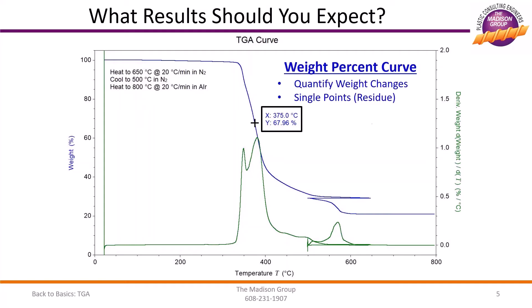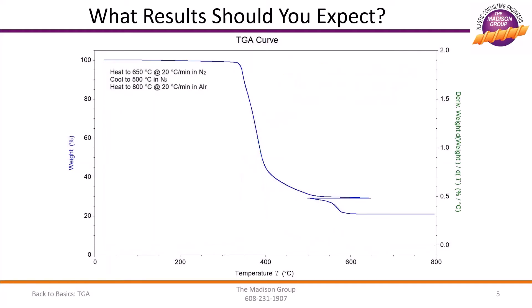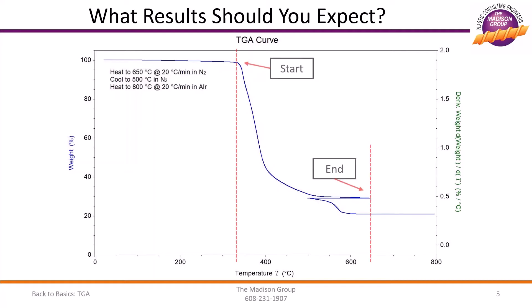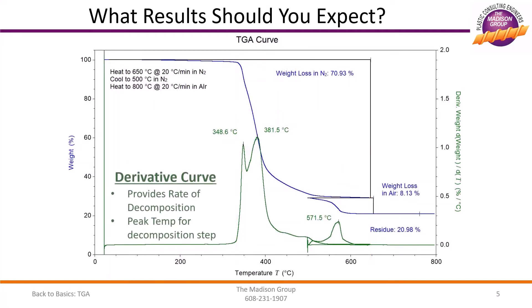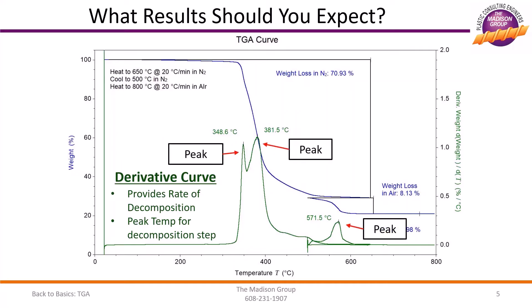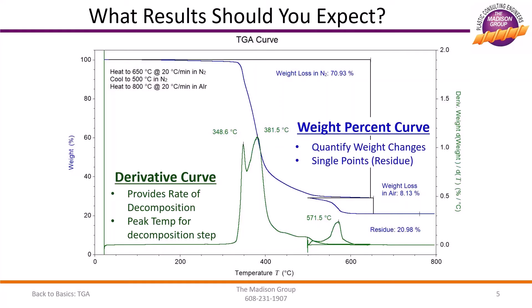The weight percent curve is primarily used to determine the amount of weight changes for each decomposition step in the plastic, as well as the amount of inorganic residue left after completion of testing. The usefulness of the derivative curve can be observed by removing it from the graph. While the approximate temperature range for an individual decomposition step can be eyeballed on the weight percent graph, it is much more difficult to accurately determine the temperature at the center of the decomposition step, or if it is centered around multiple temperatures. The derivative curve clearly shows the temperatures at which each decomposition step starts and ends, and allows you to accurately assess the changing rate of decomposition to determine the temperature of maximum decomposition rate, or whether there are multiple maximums for a single decomposition step. Both curves are used to accurately and precisely assess the TGA data.